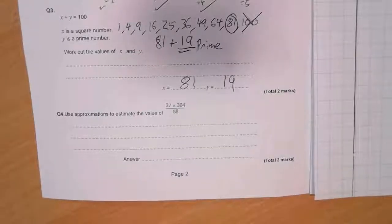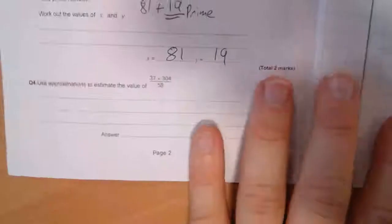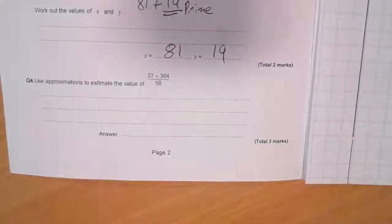Question 4. Use approximations to estimate the value of 37 times 304 divided by 58.